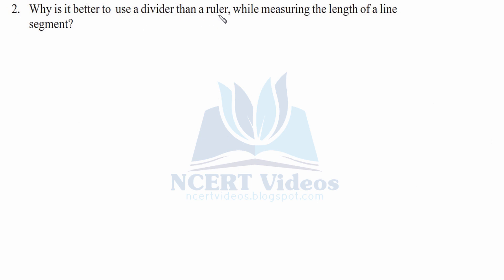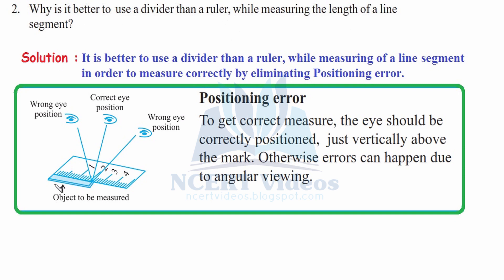Question two: why is it better to use a divider than a ruler while measuring the length of a line segment? If we have a line segment and we are looking from the left side or right side, we will not be able to get the actual dimension. The correct eye position is vertical to the point. Incorrect positioning leads to a positioning error. To get the correct measure, the eye should be correctly positioned just vertically above the mark; otherwise errors can happen due to angular viewing. To remove this, it is better to use a divider than a ruler.